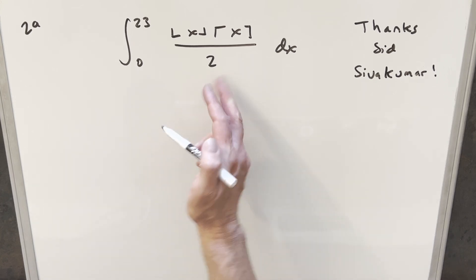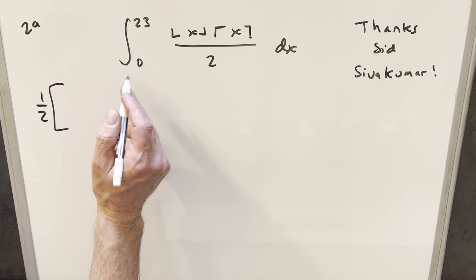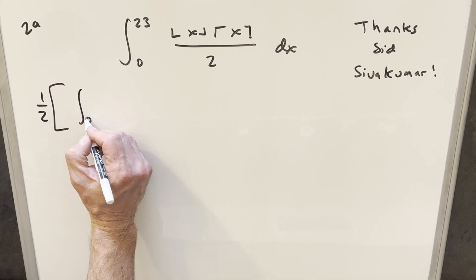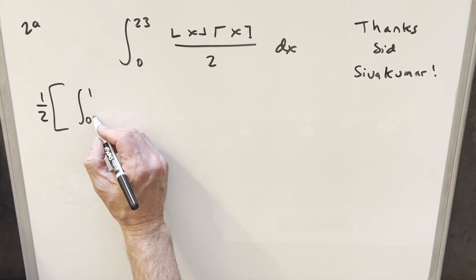So what I want to do with this first, let's factor out this 2 and write it as a 1 half in front. And then for our first integral, we're just going to be going from 0 to 1.